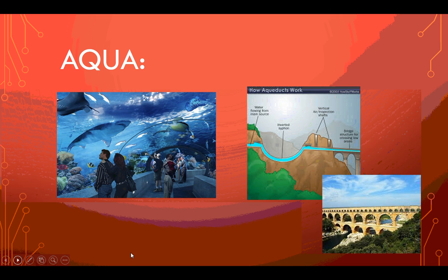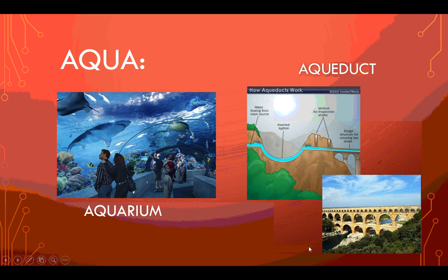Aqua. This should be an easy one. We have some visitors to an aquarium — isn't that beautiful? Have you ever been to the Baltimore Aquarium? On the right we have some beautiful architecture — a picture of a Roman aqueduct, with a little graphic if you're curious how it works. There are lots of cool YouTube videos about it if you're a history buff. Aqueducts were mainly used to move water. As you can figure out, aqua means water.